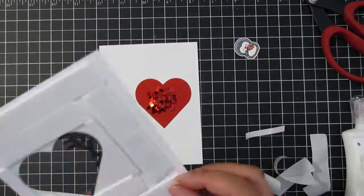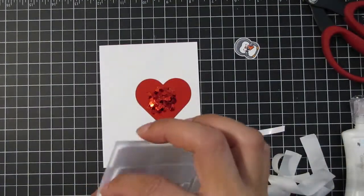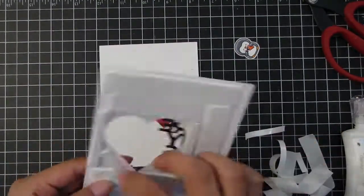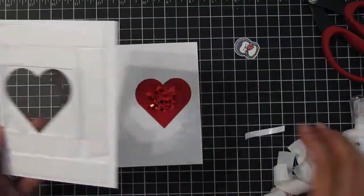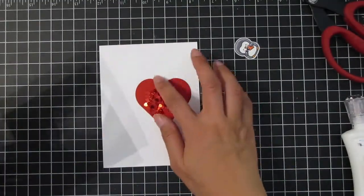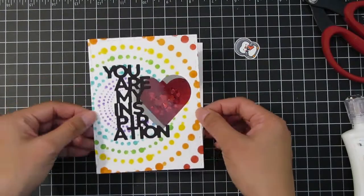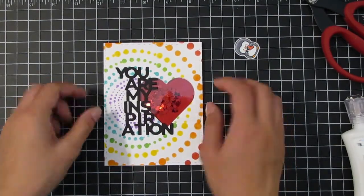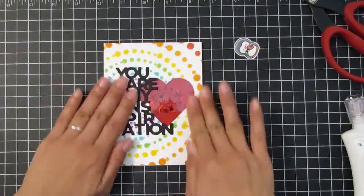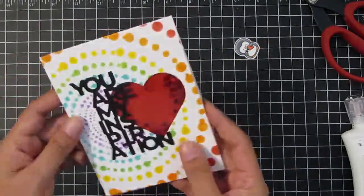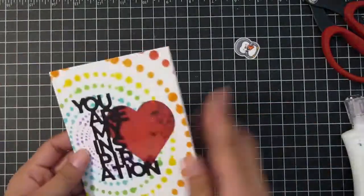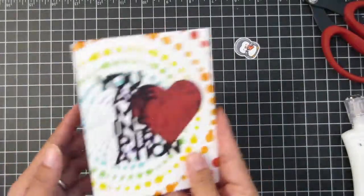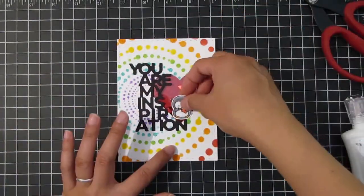Then I go ahead and peel off the adhesive backing for that top portion of the card there. I make sure that my card is nice and straight, making sure that the heart is lined up with that window, and then I give it a nice press so that it's nice and sealed. I'm here just shaking it generously just to make sure nothing is falling out.